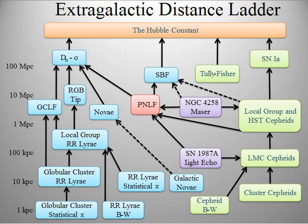Parallax measurements typically have an accuracy measured in milliarcseconds. In the 1990s, the Hipparcos mission obtained parallaxes for over a hundred thousand stars with a precision of about a milliarcsecond, providing useful distances for stars out to a few hundred parsecs. The Hubble telescope WFC3 now has the potential to provide a precision of 20 to 40 microarcseconds, enabling reliable distance measurements up to five thousand parsecs for small numbers of stars.